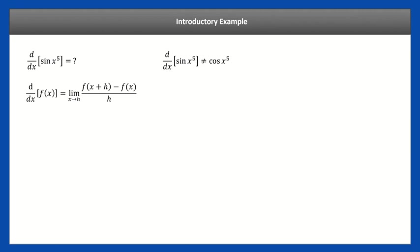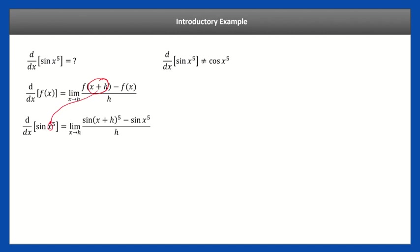Remember that the derivative of a function is given by the limit definition. We've done this before. If we apply that here, f(x) is sine of x to the fifth. Plugging that in, it's going to be sine of x plus h to the fifth power minus sine of x to the fifth — that's where we plug x plus h into x. And there's our limit definition. We're going to work with this to find the actual derivative of sine of x to the fifth.